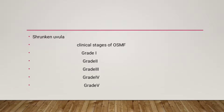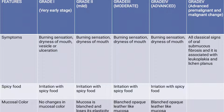What are the clinical stages of OSMF? According to the classification, there are five stages based on clinical aspects: grade one, grade two, grade three, grade four, and grade five. Grade one is the very early stage, grade two is mild, grade three is moderate, grade four is advanced, and grade five is advanced with premalignant and malignant changes.